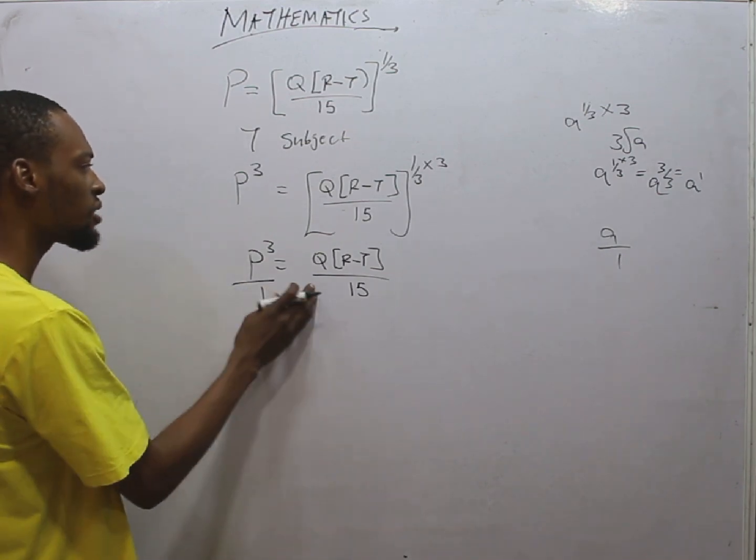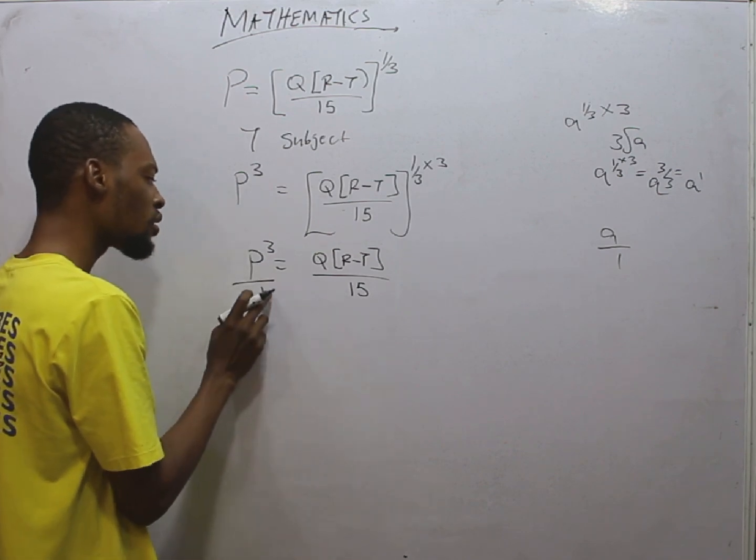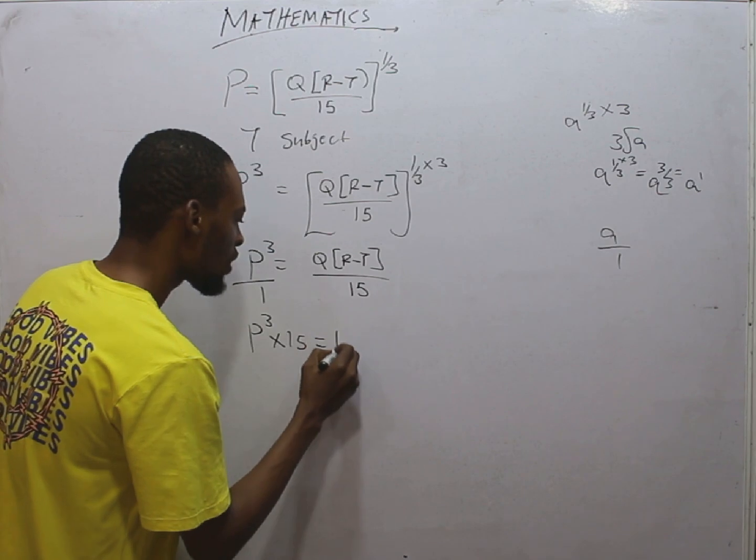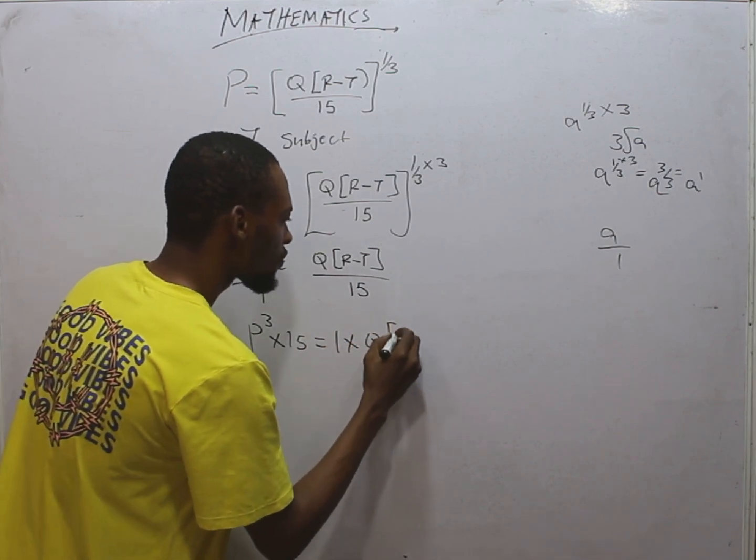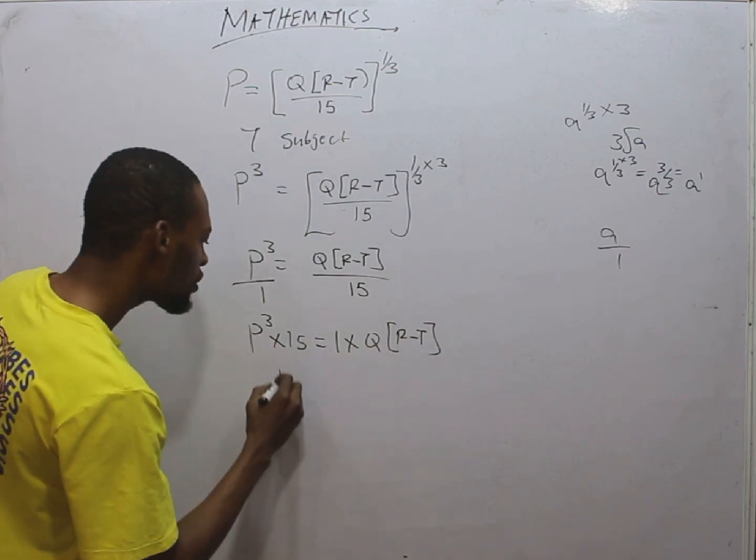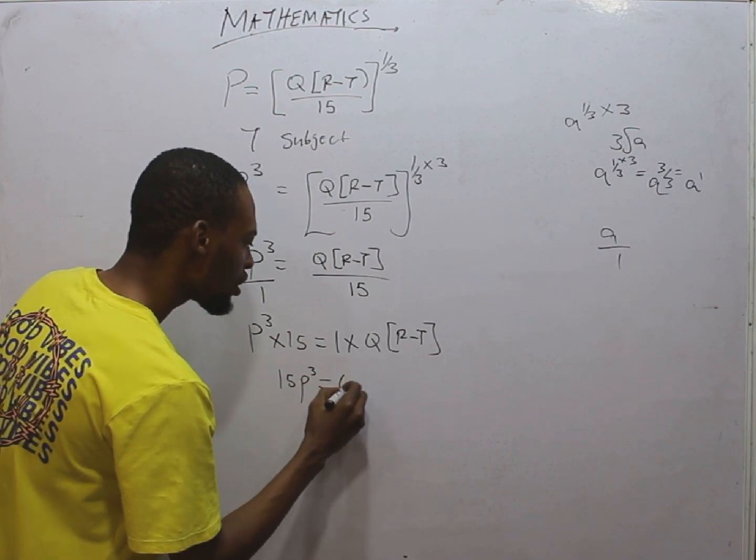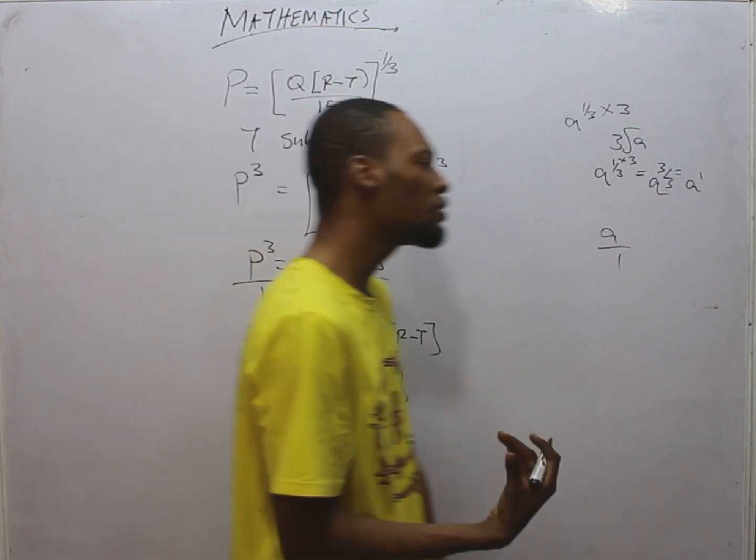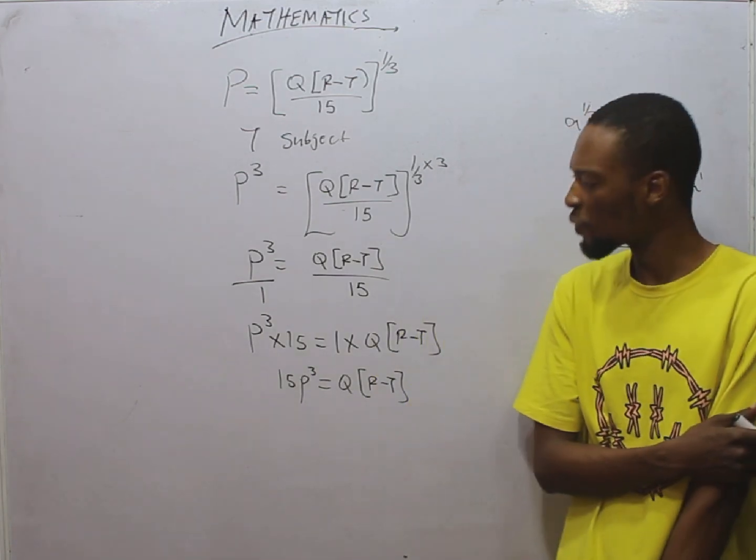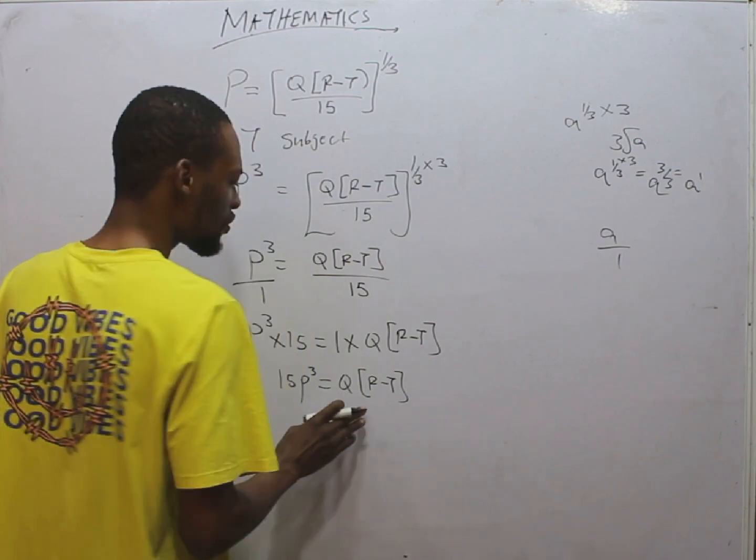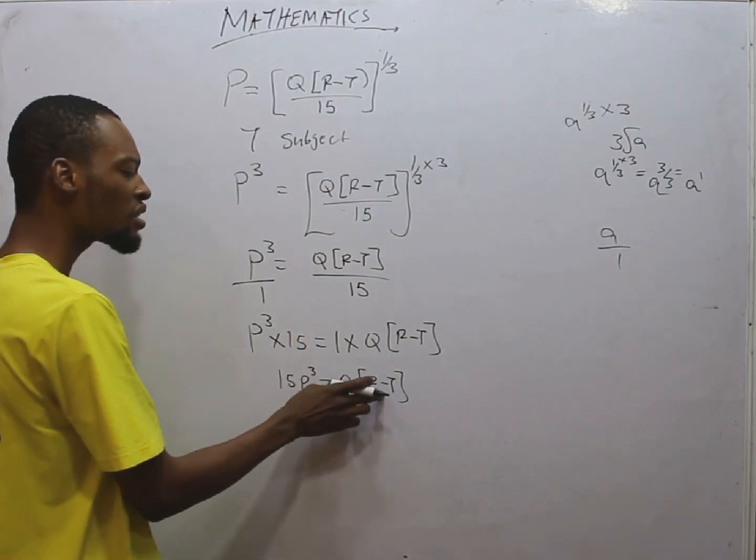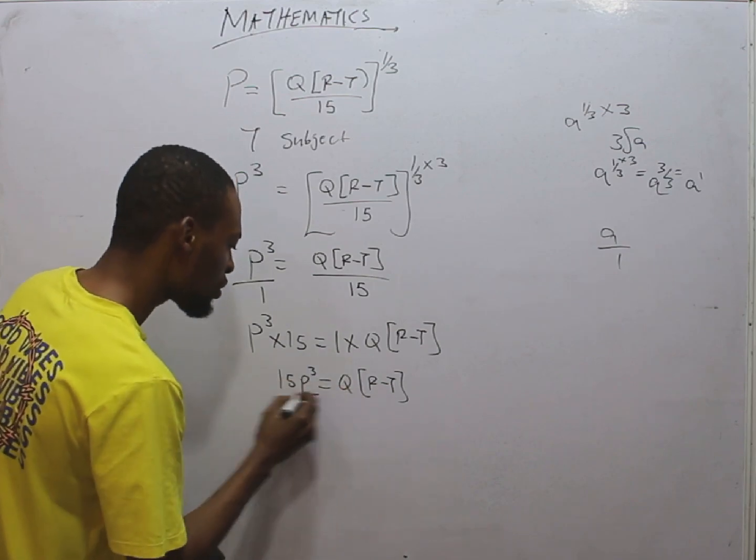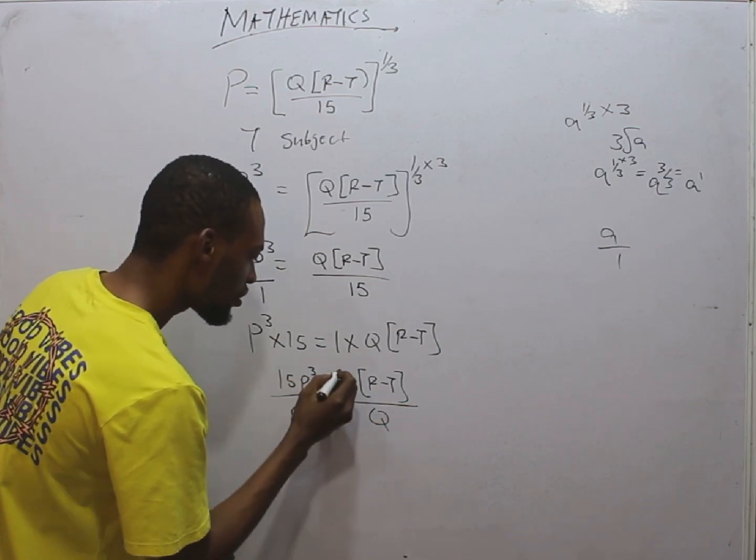Take note that if A is standing alone, it is the same thing as A over 1, which means P raised to the power of 3 is the same thing as P raised to the power of 3 over 1. What should we do next? Let us cross multiply, which means this times this equals this times this. P raised to the power of 3 times 15 equals 1 times Q R minus T. This will give you 15P raised to the power of 3 equals Q R minus T. Let's remove Q next. Divide both sides by Q.